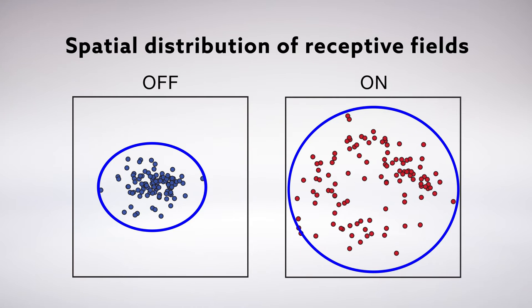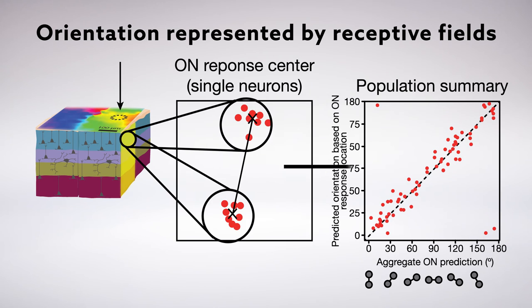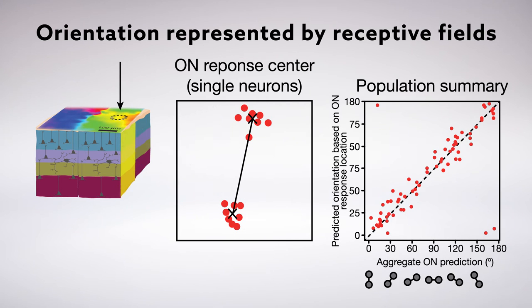But that didn't mean there wasn't an underlying organization. The researchers found that these seemingly disordered on responses were actually highly structured, not for location, but for orientation.